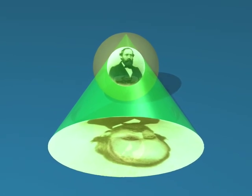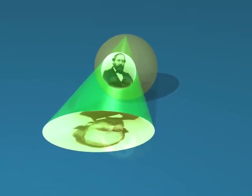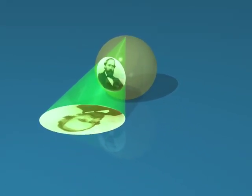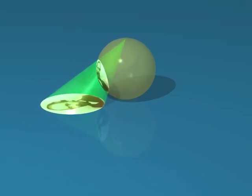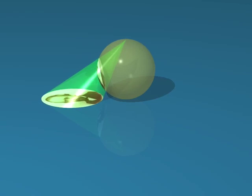We have seen that the stereographic projection sends circles on the sphere, not going through the pole, to circles in the plane. And now we are going to prove it.